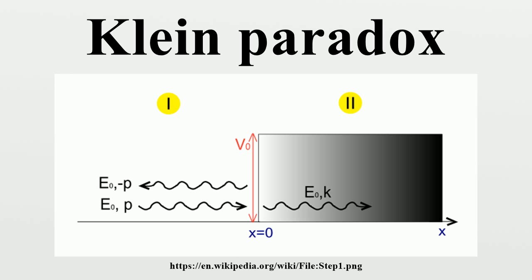continuity of the wave function at x=0 yields, and so the transmission coefficient is one and there is no reflection. One interpretation of the paradox is that a potential step cannot reverse the direction of the group velocity of a massless relativistic particle.